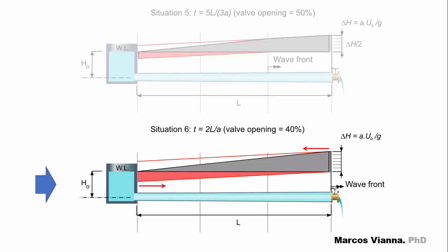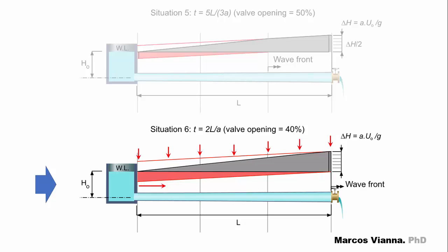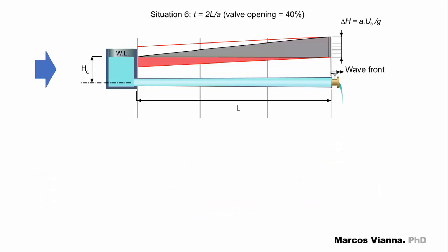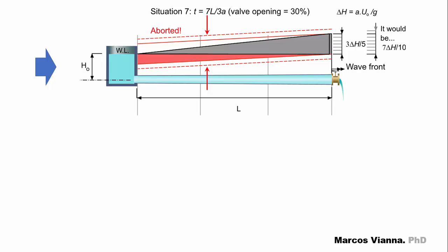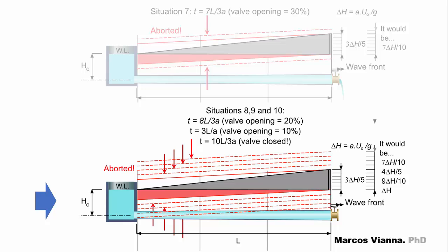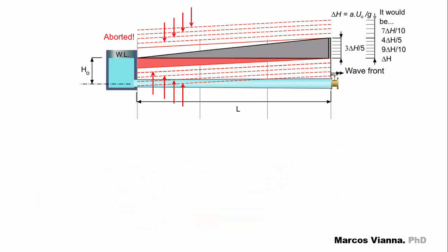2L over A seconds after the beginning of the closure operation, the valve opening is now at 40%. The pressures in the pipeline will be attenuated by the waves reflected by the reservoir along the entire extension of the pipeline. From now on, the pressures will stop increasing in the pipeline — this is the critical situation for maximum pressures. All the pressure waves sent by the valve will be aborted by the waves reflected by the reservoir, and this will happen until the valve is completely closed. In our case, the maximum pressure variation at the valve will be only three-fifths of the value that it would reach in instantaneous or quick closure — which would be equal to AU0 over G, according to Yukovsky.